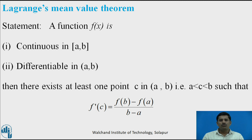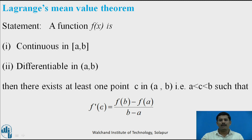That is, for functions which are continuous in the closed interval [a, b] and differentiable in the open interval (a, b), there exists at least one point between a and b, say c, such that the derivative of the function at that point is exactly equal to [f(b) - f(a)] / (b - a), where f(b) and f(a) are the values of the function at the points a and b.